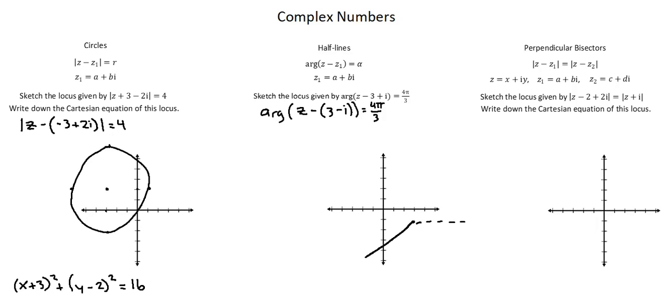4 pi over 3 going down and to the left counterclockwise from our starting position. This represents the half line of the equation given. This is a half line because it's extending infinitely in one direction. We start at 3 negative 1 and extend infinitely at an angle of 4 pi over 3.